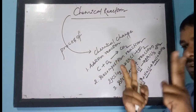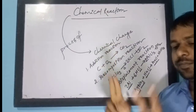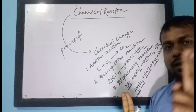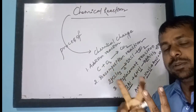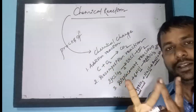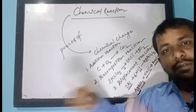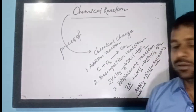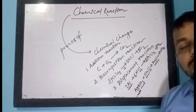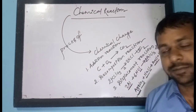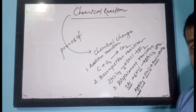Here we see two molecules — AgNO₃ and NaCl. The Ag is reacting with Cl, and the Na is reacting with NO₃ — so double displacement is taking place. This reaction is called a double displacement reaction. That was single displacement here and double displacement here.